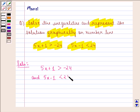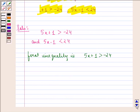Now the first inequality is 5x + 1 is strictly greater than -24. We can say 5x + 1 - 1 is strictly greater than -24 - 1, or 5x is strictly greater than -25, or x is strictly greater than -5.